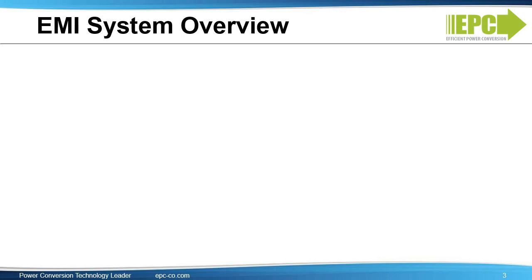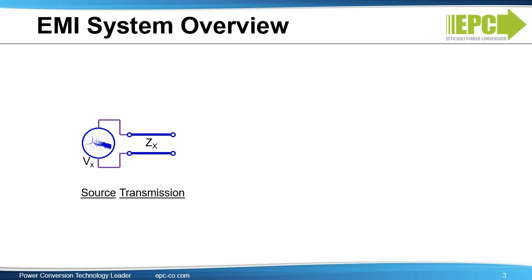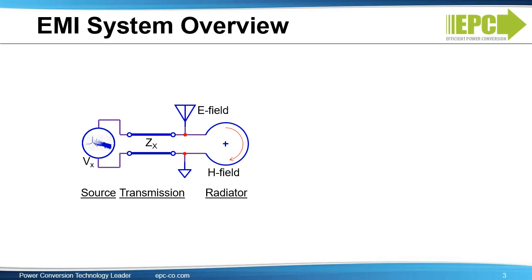An EMI system comprises several components. First is the energy source, which can originate in various forms, for example as a switching event of a transistor. Energy from the source needs a transmission path, such as conductors on a PCB. These transmission paths can form plates of a capacitor where the voltage can radiate as an E-field, or in loops where the current can radiate as an H-field. It is further possible for a loop to radiate an E-field, and vice versa for the capacitor plates to radiate H-fields. The EMI energy must be received — in the case of direct transmission it is termed conducted EMI, and in the case of fields it is termed radiation.